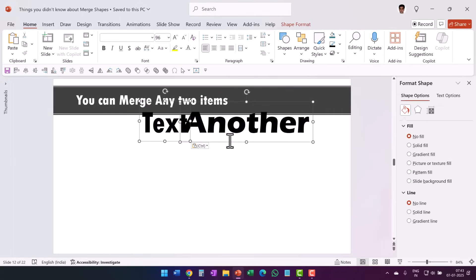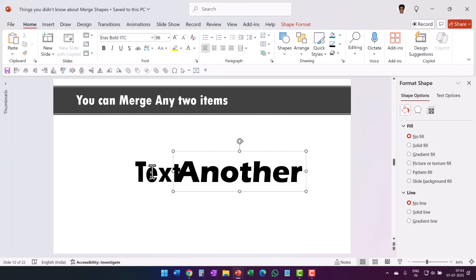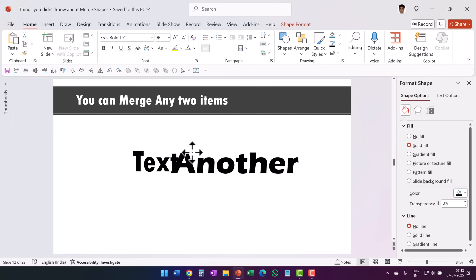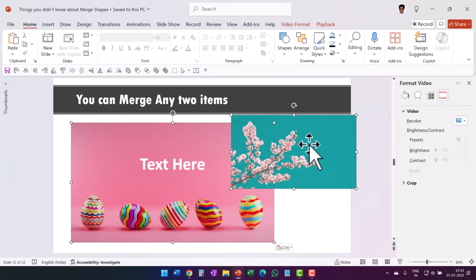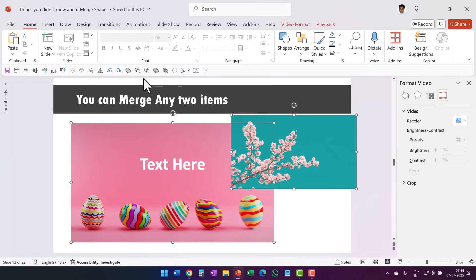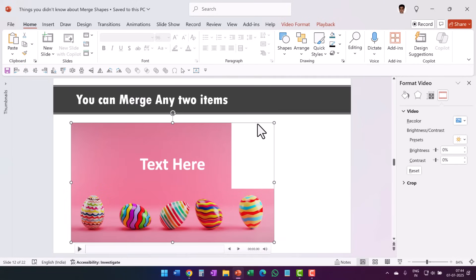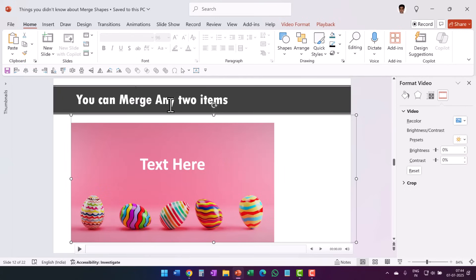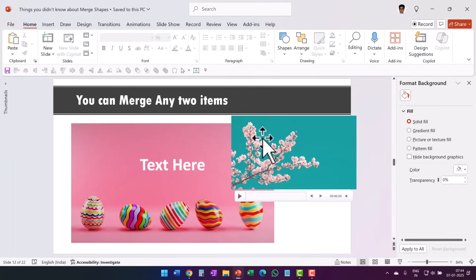You can play a video with text punched out and have another video running at the back for an interesting effect. Very few people know you can combine two text elements as well — two different texts with different font types, placed one on top of the other, and merged with Shape Union behave as one object. The same way you can use two videos, though when combining videos the 'almost' element applies: you can only subtract one video from the other. Selecting two videos and using Shape Union causes one to disappear. So Shape Subtract is what works between two videos.